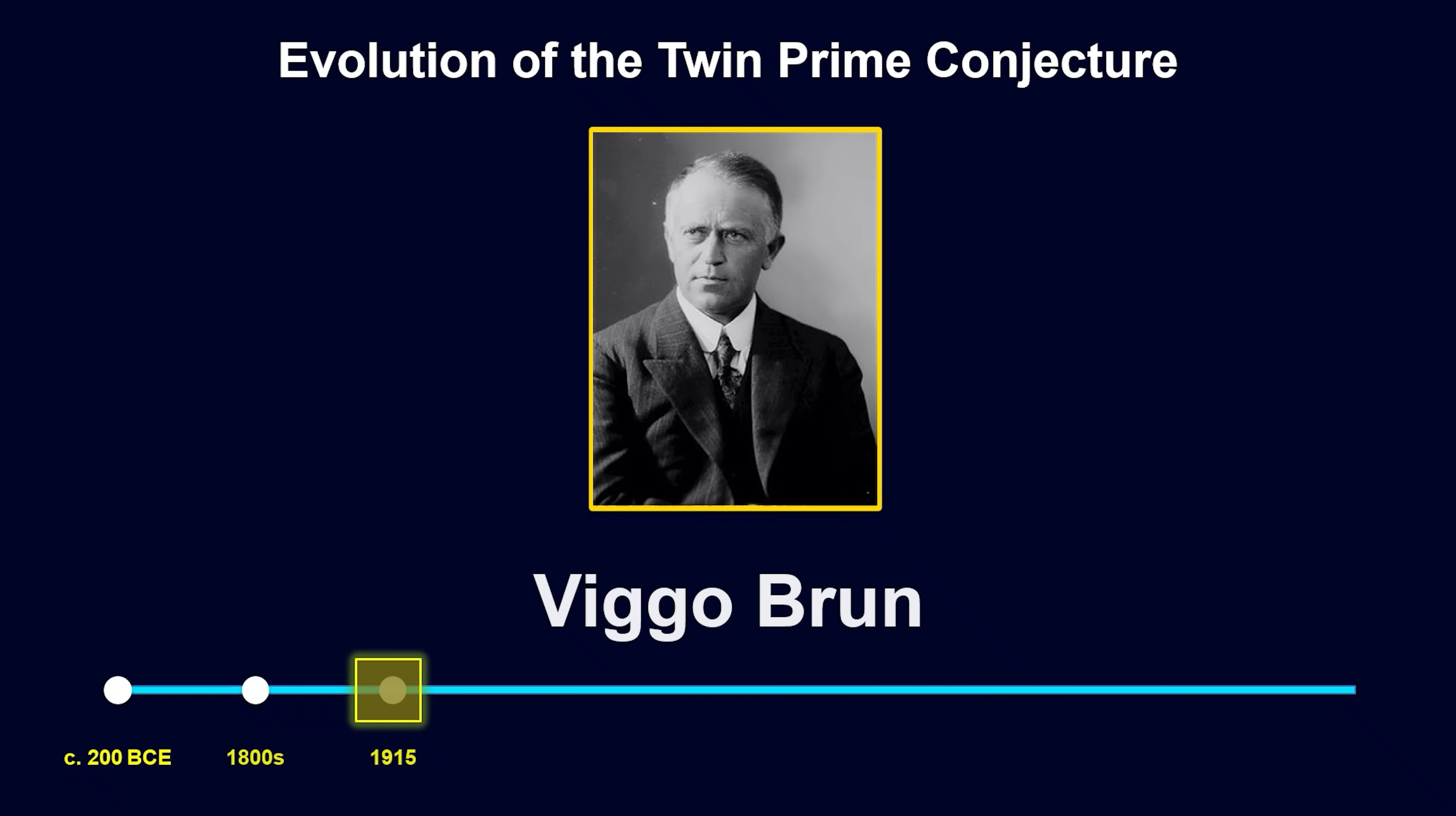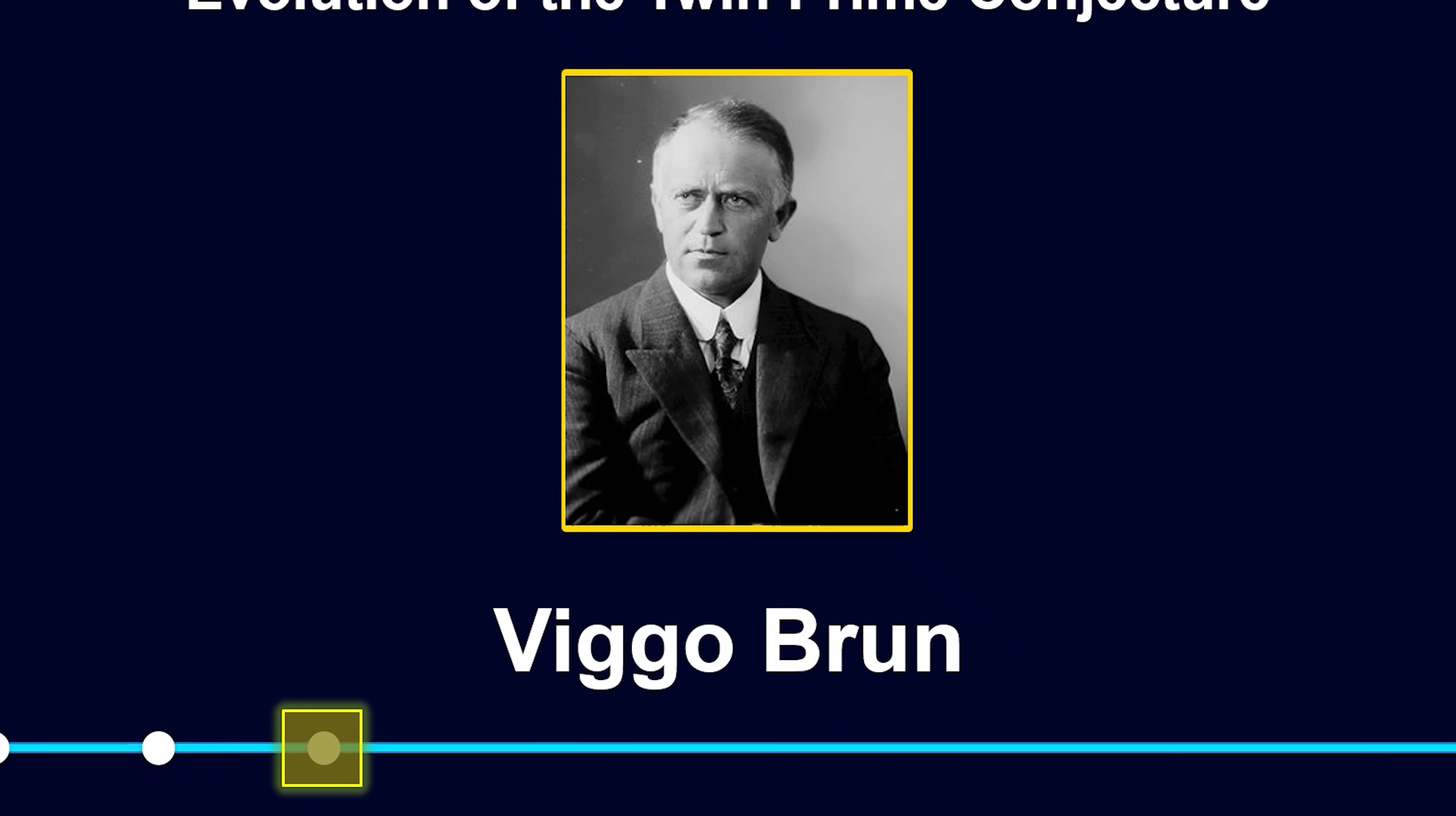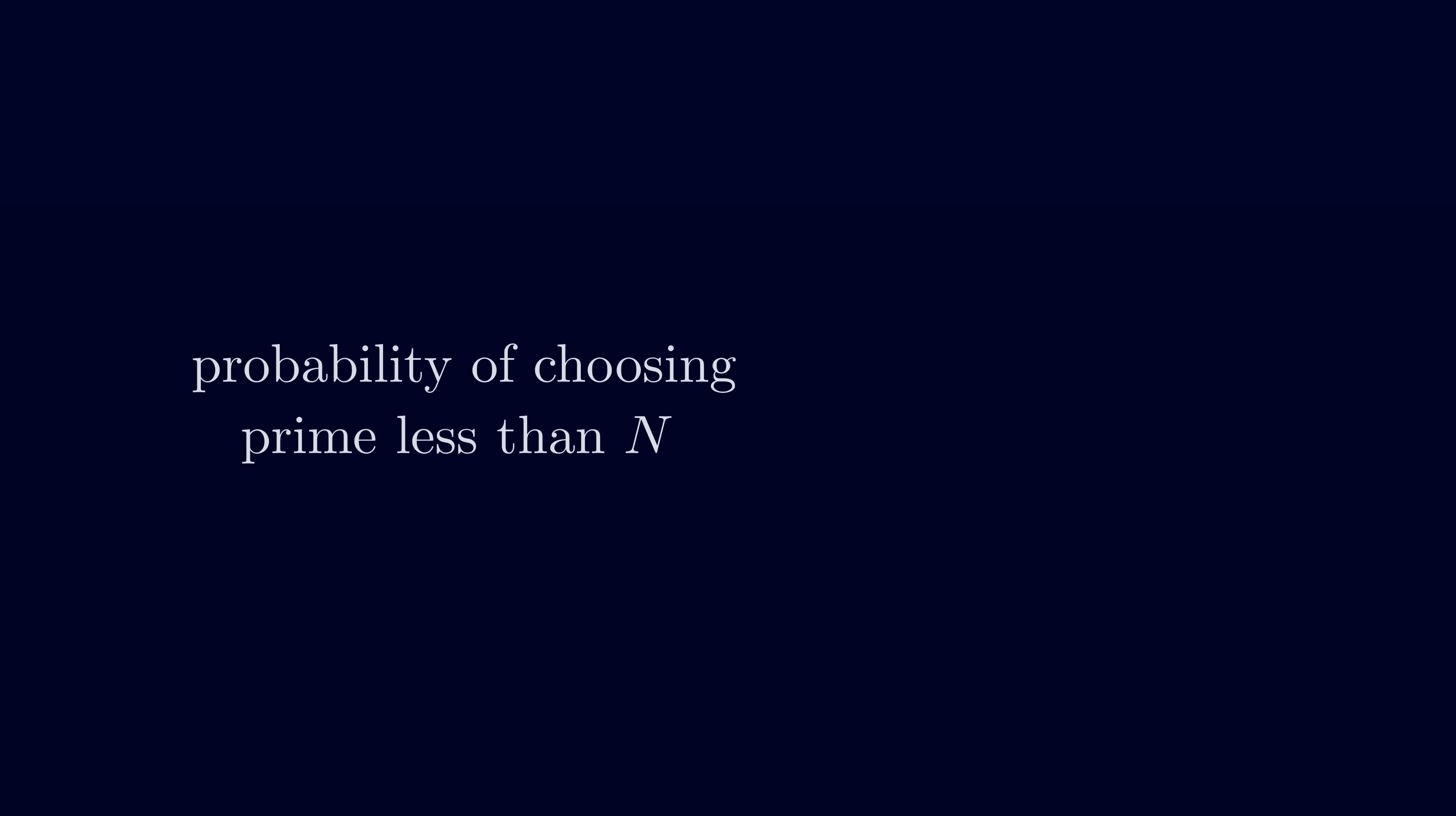Now, this theorem is very useful at telling us about primes, but it doesn't tell us about twin primes. Now, all of this changed in the year 1915, when Norwegian mathematician Viggo Brunn entered the scene. So what did he prove? Remember how we said earlier that the probability of choosing a prime between 1 and n is approximately 1 over log n? Let's adapt this for twin primes.